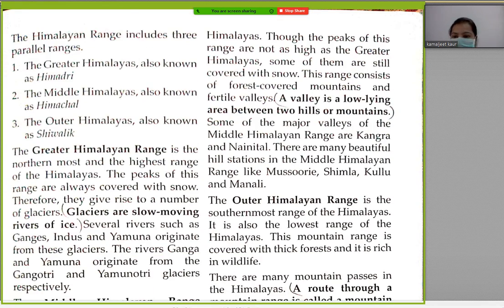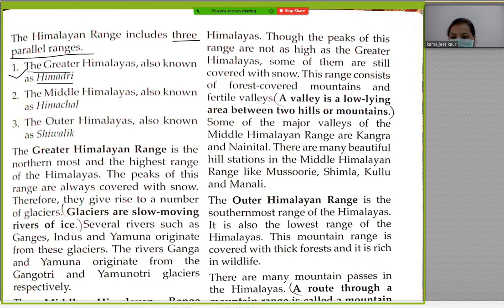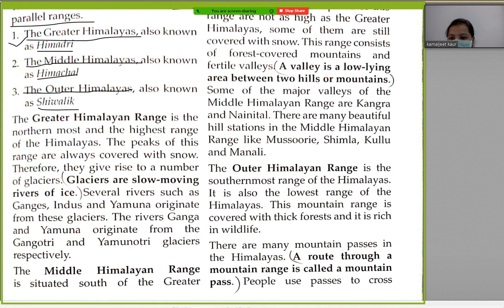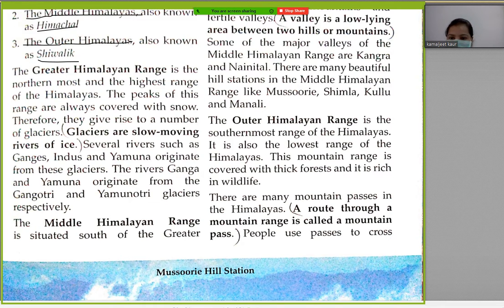The Himalayan range includes three parallel ranges. The first is the Greater Himalayas, also known as Himadri. The second is the Middle Himalayas, also known as Himanchal. The third is the Outer Himalayas, also known as Shivalik.